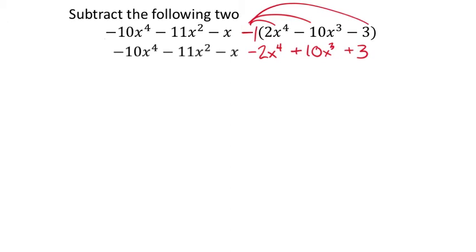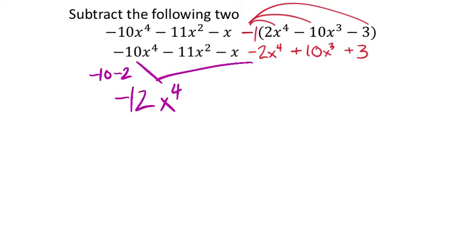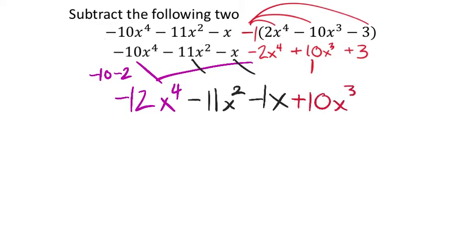Now combining like terms after distribution: the x⁴ terms are −10 − 2 = −12x⁴. The −11x² has no like term, so it stays. The −x likewise stays alone. The +10x³ has no like term. The +3 is also standalone. So the final answer has five terms: −12x⁴ + 10x³ − 11x² − x + 3.